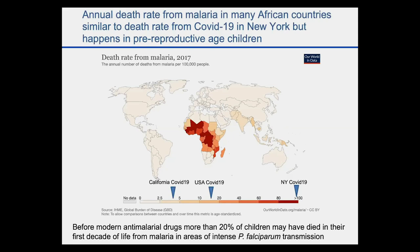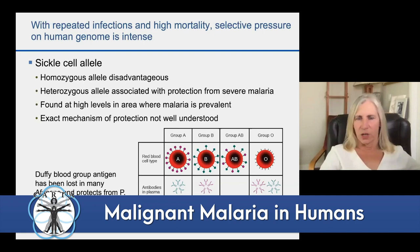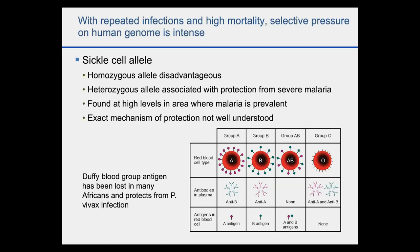With repeated infections and high mortality, selective pressure on the human genome is intense. Several alleles are known to have a major contribution. One is the sickle cell allele, or hemoglobin S. Having both copies is very disadvantageous and causes severe illness, but being heterozygous for the sickle cell allele provides protection from severe malaria. It is clearly maintained in African populations because of this protective advantage, and is found at high levels in areas where malaria is prevalent — though the exact mechanism of protection is not that well understood.